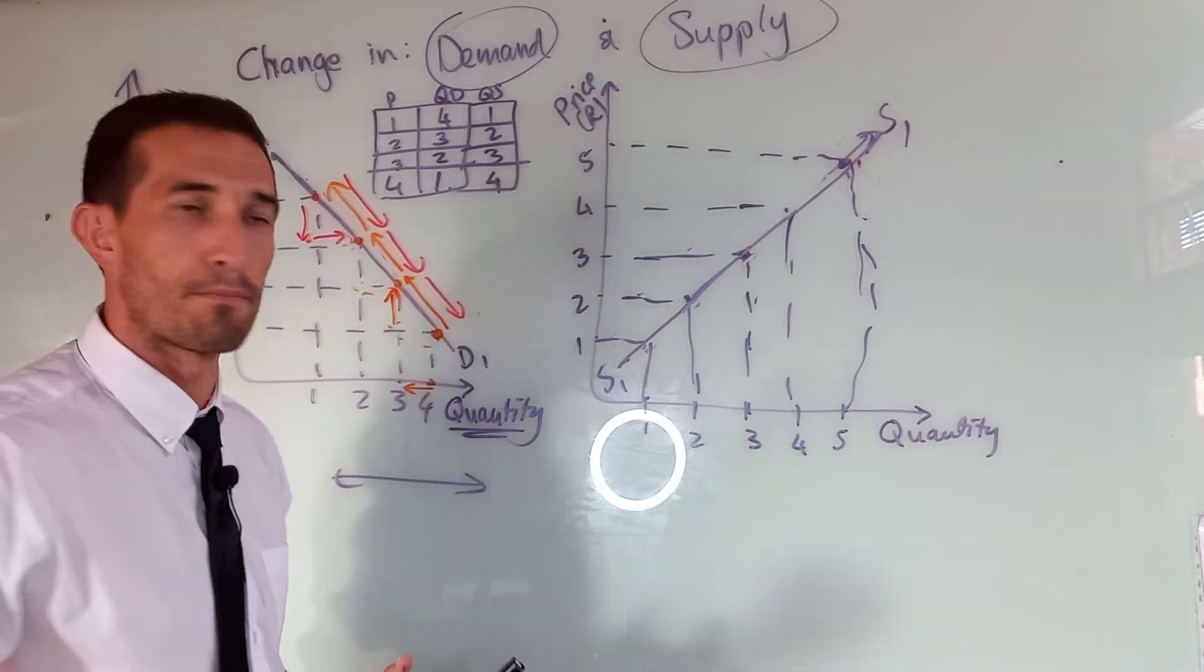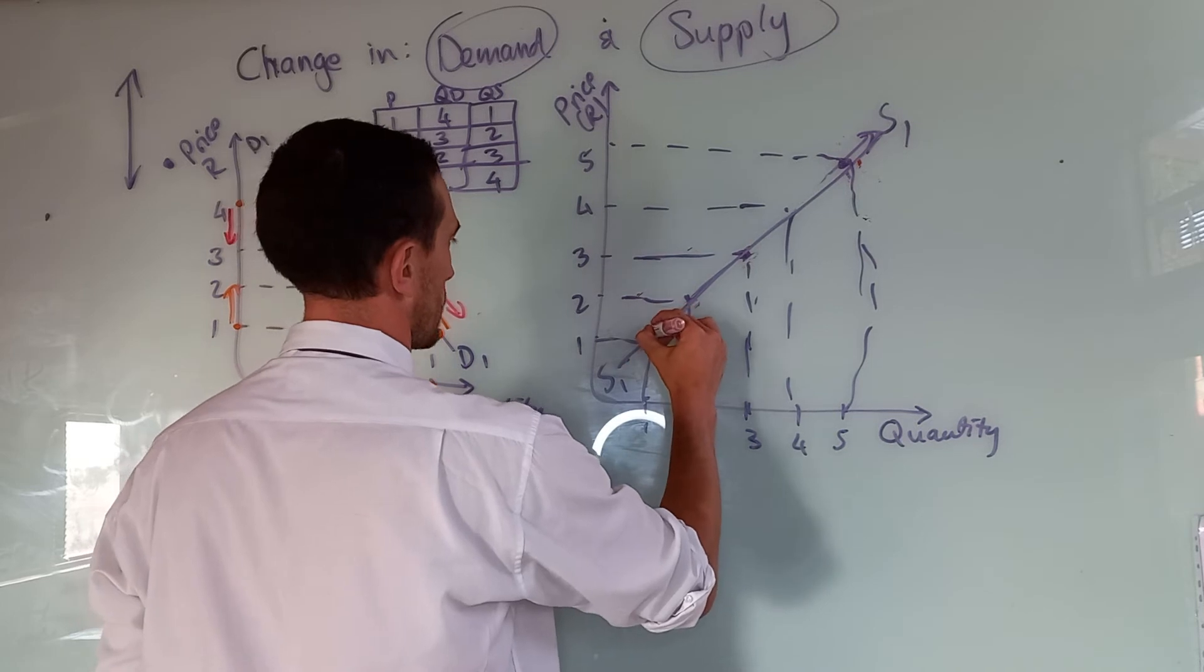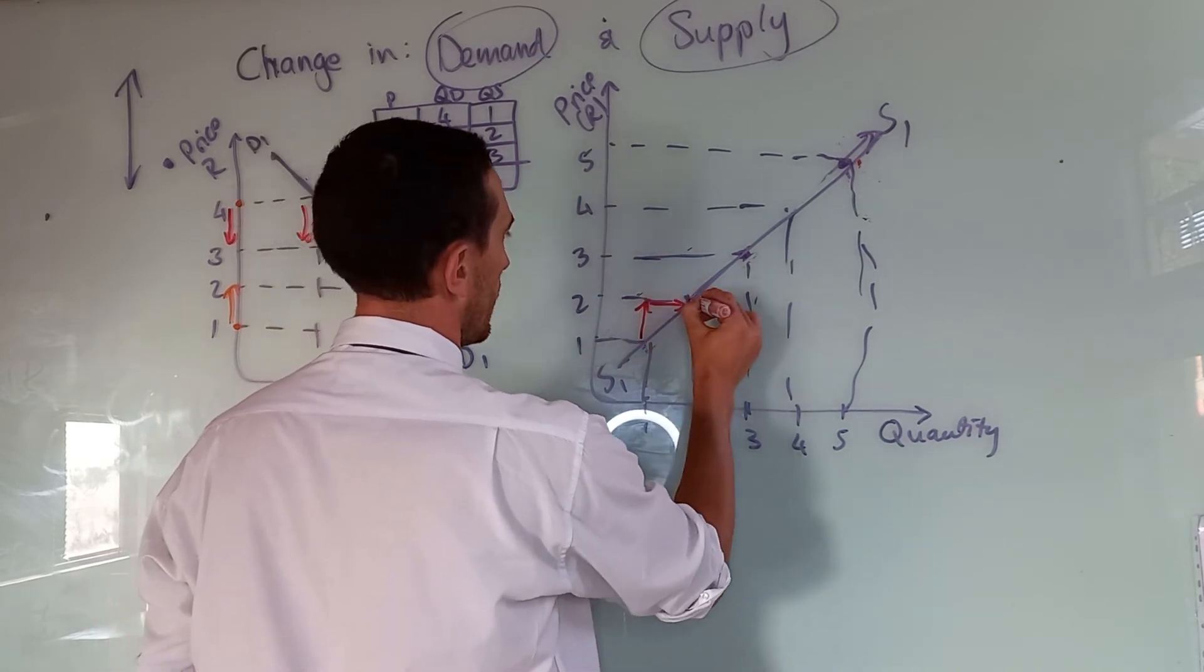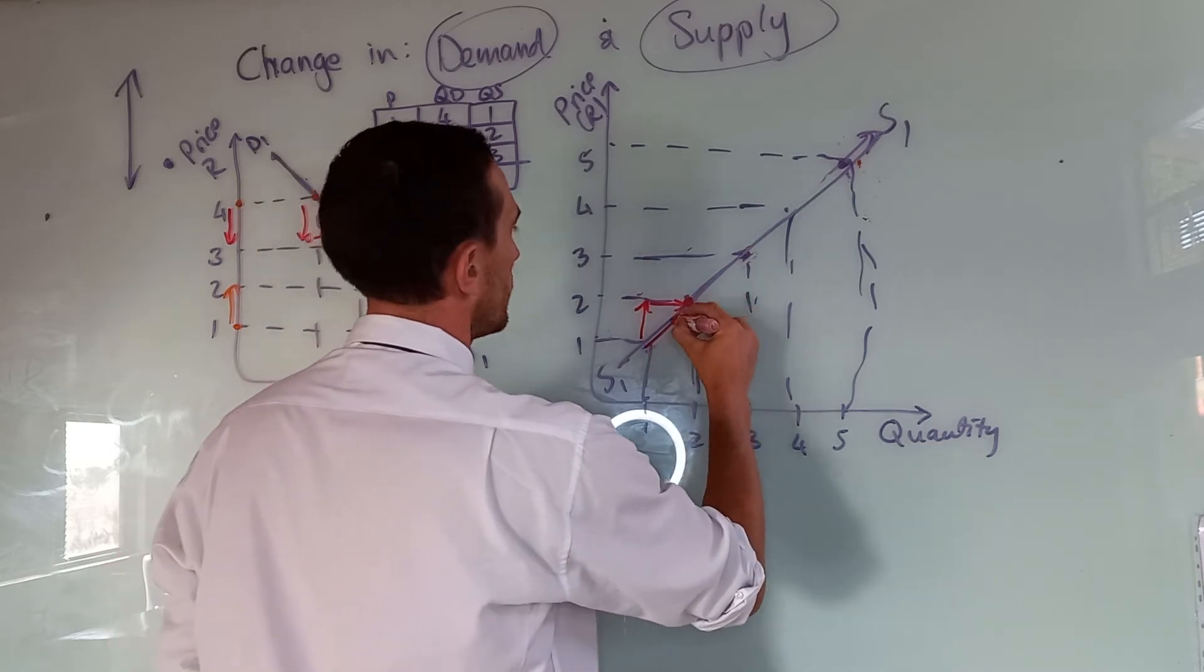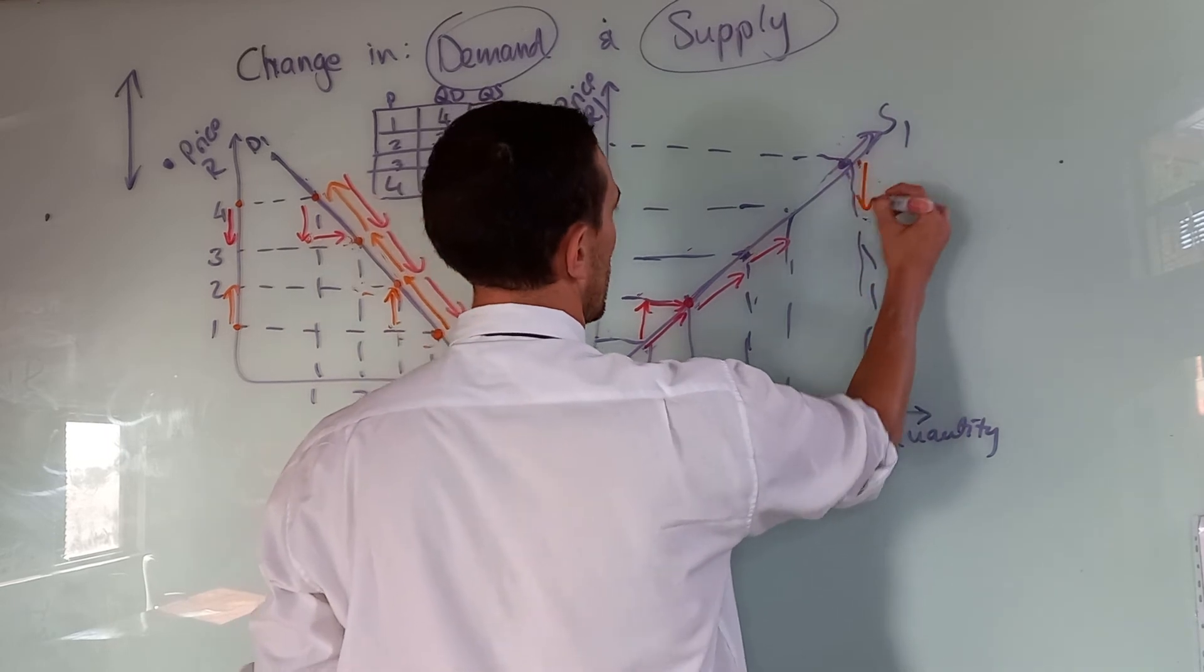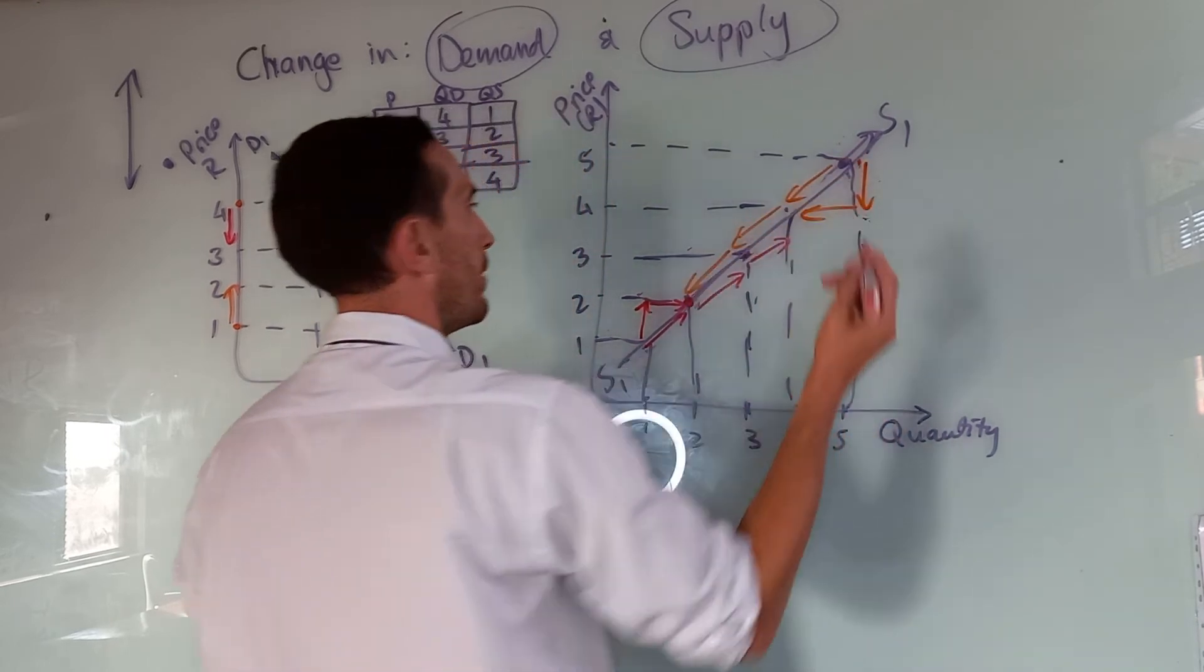The same goes for supply. If there's an increase in my prices, then I would see an increase in my supply. That's a change in quantity supply. But if there's a decrease in my price, there will also be a decrease in my quantity supplied.